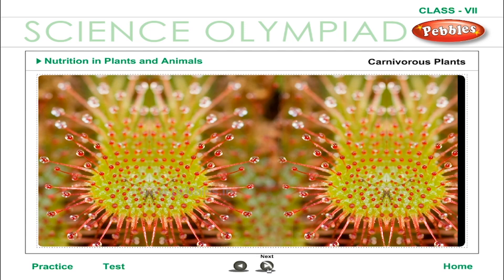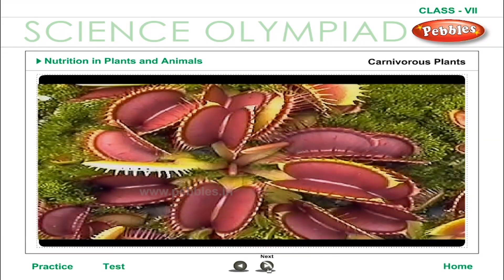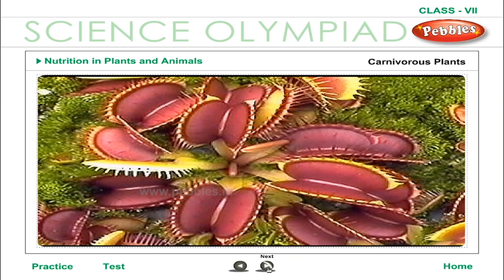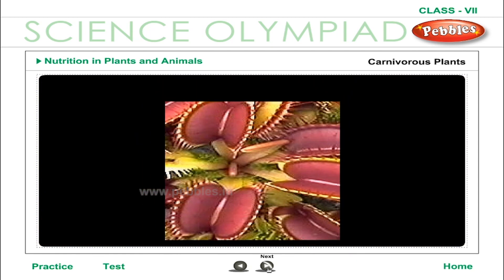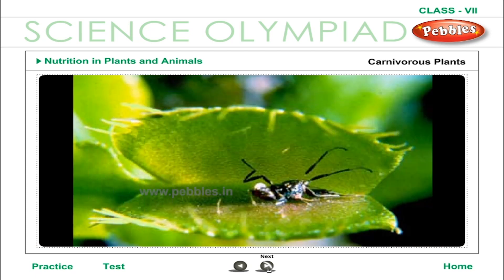The leaves of sundew have tentacles with drops of a sticky substance called mucilage at the ends. Insects get stuck in this substance and become entangled, and the mucilage then digests the helpless insect. The trap of the Venus flytrap is a highly modified leaf. On the inner surface are reddish hairs to attract insects and short stiff hairs called trigger or sensitive hairs. When anything touches these hairs enough to bend them, the two lobes of the leaves snap shut in less than a second.